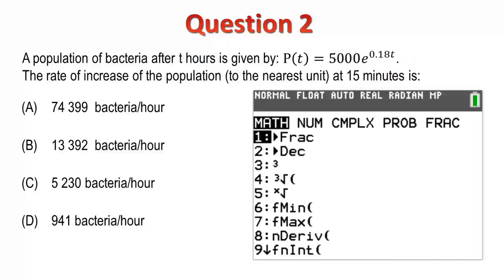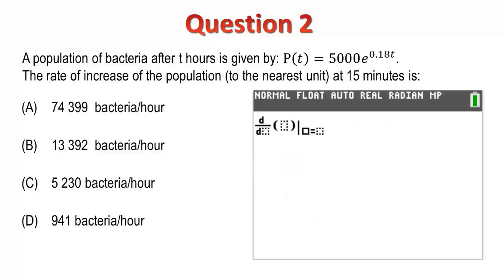So, I'll use the Math menu, and I'll select Numerical Derivative, and I'll put my variable t, and we'll enter the function 5000 e to the power of 0.18 t. And I'll set t equal to 15 over 60. And I see the answer is 941. So, I'll select option D.